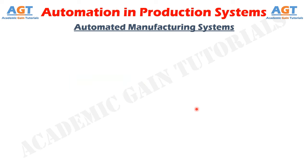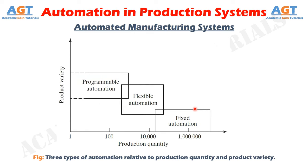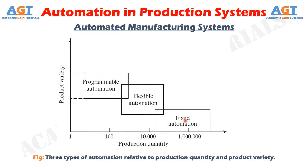Automated manufacturing systems can be classified into three basic types: Number 1, fixed automation; Number 2, programmable automation; and Number 3, flexible automation. They generally operate as fully automated systems, although semi-automated systems are common in programmable automation.